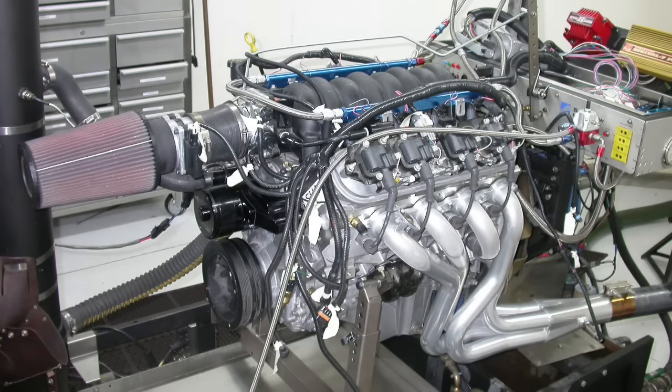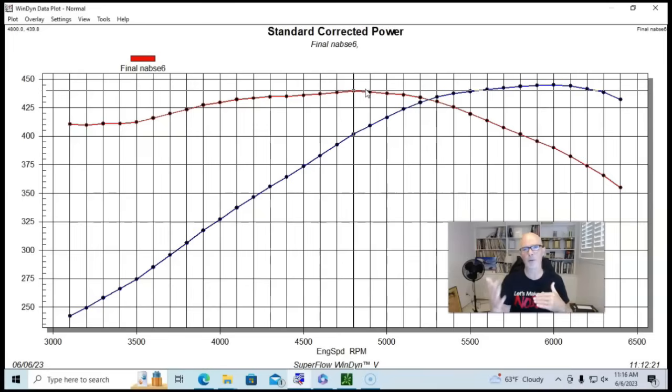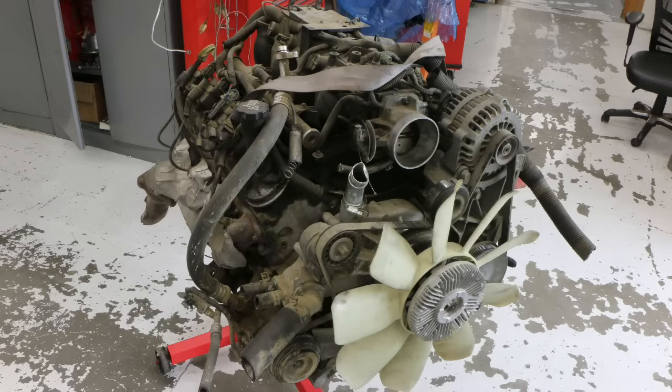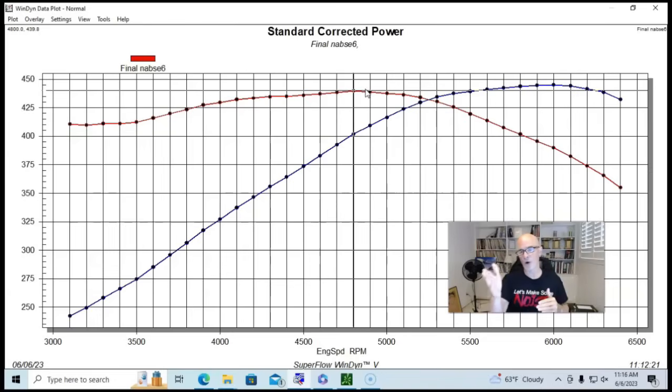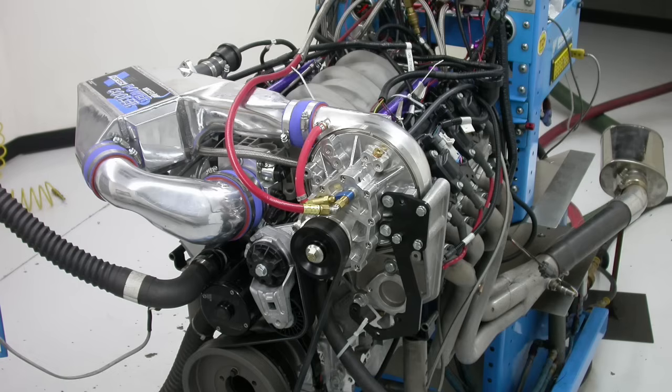After getting our naturally aspirated combination up and running and establishing our baseline, I always like to do that even on a junkyard motor or a new crate motor. I like to run them NA so that we know what we're starting with. We also know that the motor's in good shape and it's hitting on all the holes and it's working before we put boost on. I don't like to just put a combination together with boost and then run it there. Then if you run into problems, you don't know if it was a problem with the naturally aspirated motor or if it's just something that's a function of boost.